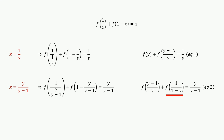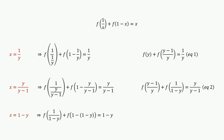From the second equation, we don't know the value of f of 1 over (1 minus y). To find that value, we need to substitute x equals 1 minus y. Then we have the equation f of 1 over (1 minus y) plus f of 1 minus (1 minus y) equals 1 minus y.